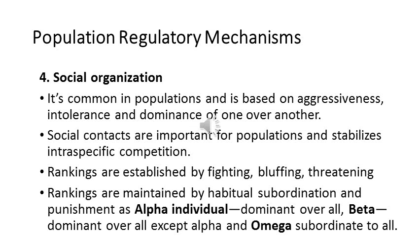Social organization is very common in many populations. It is based on aggressiveness, intolerance, and dominance of one individual over another. Social organization is intraspecific, and individuals of the same species interact to form a social setup. Intraspecific interactions are very important as they stabilize competition within that species. Rankings are usually established by fighting, bluffing, or threatening, and once established, they are rarely challenged and are maintained over time by habitual subordination and punishment.